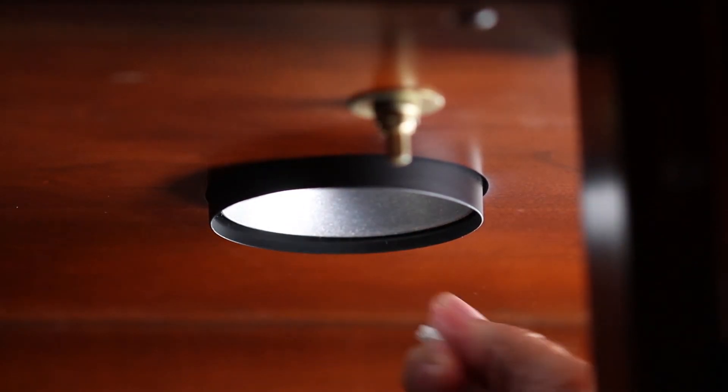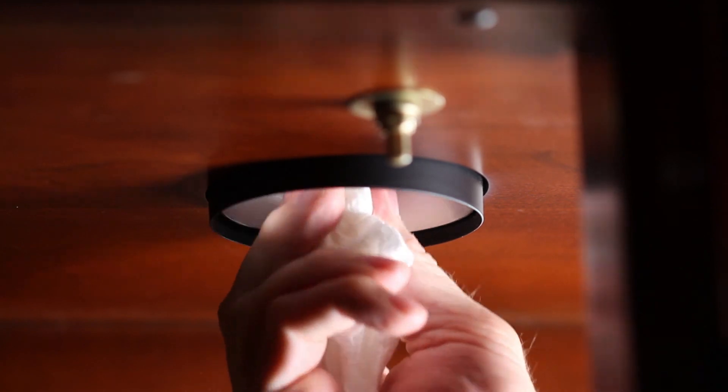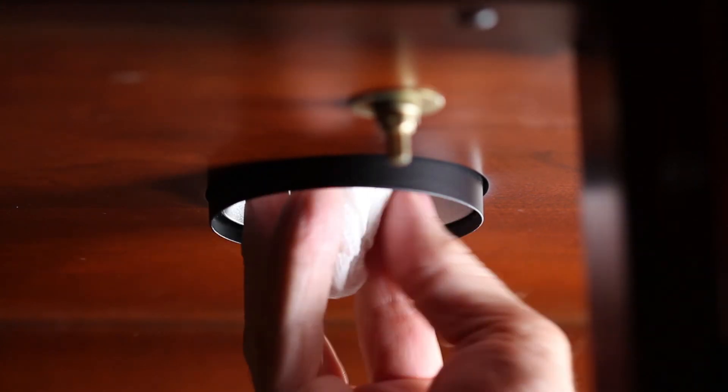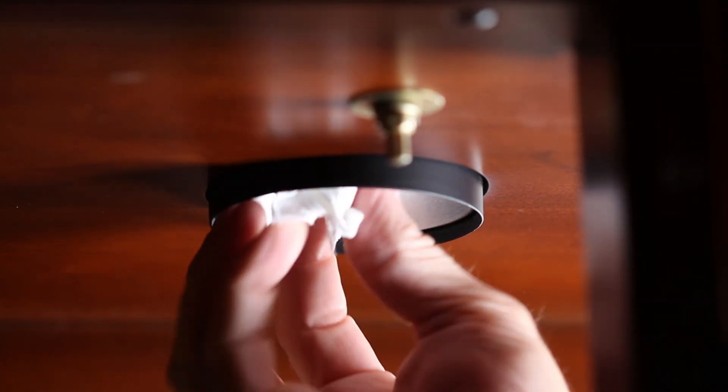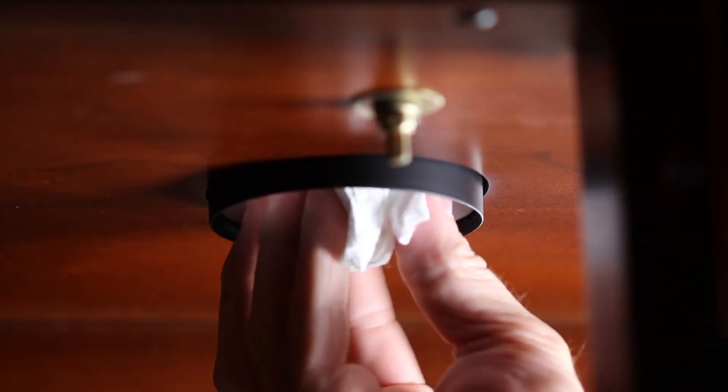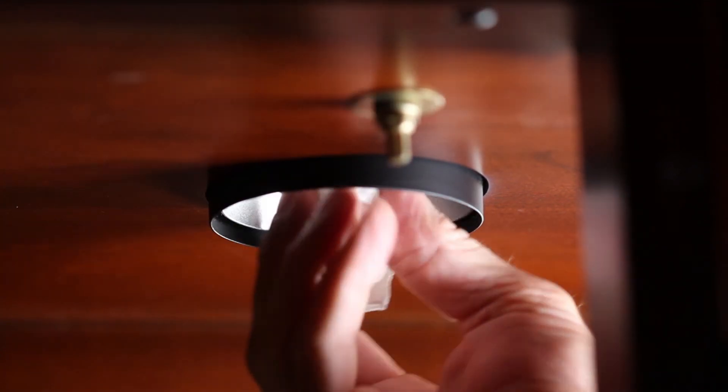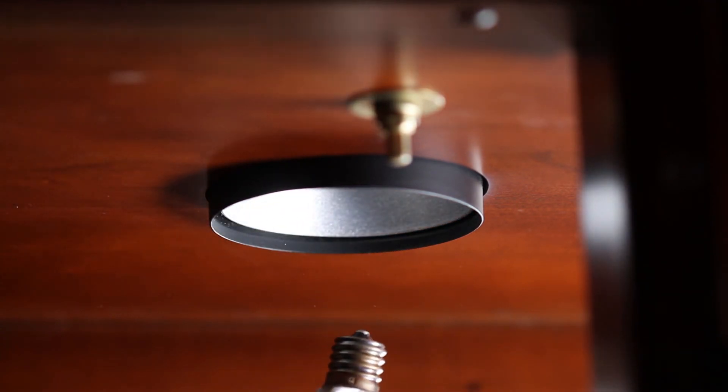Then take a piece of paper towel or toilet paper, wad it up, shove it up in the base, and start unscrewing. Keep unscrewing until you hear it come loose, and there you go, the base will pop right out.